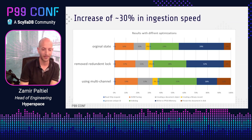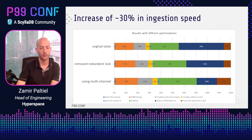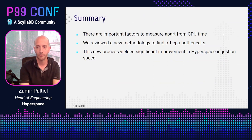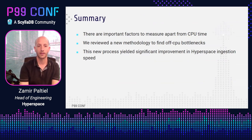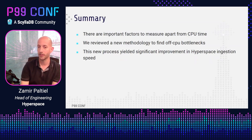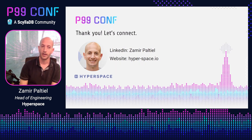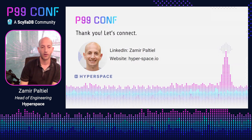And obviously we got to the next bottlenecks, so we have more work to do — that will probably be my next session. We proved that adding more load will make the bottleneck take more time. In recap: there are important factors to measure apart from CPU time; we reviewed a new methodology to find off-CPU bottlenecks; this process resulted in a significant improvement in Hyperspace's ingestion speed; and hopefully this methodology can be applied in other places and make your code run faster. If you're curious about low latency search performance in real time or any performance optimization, please reach out to me on LinkedIn. Thank you.